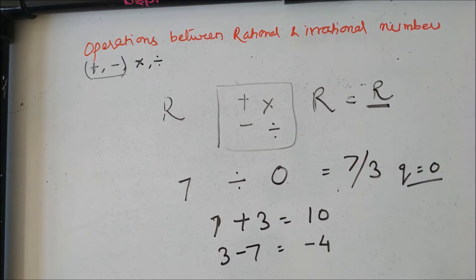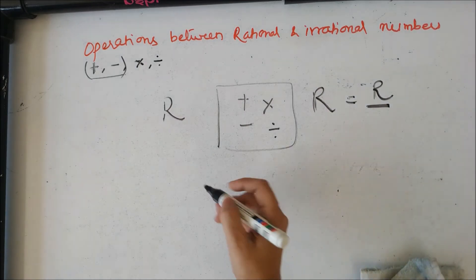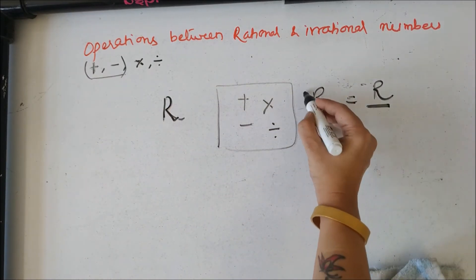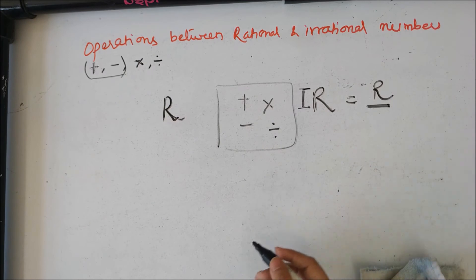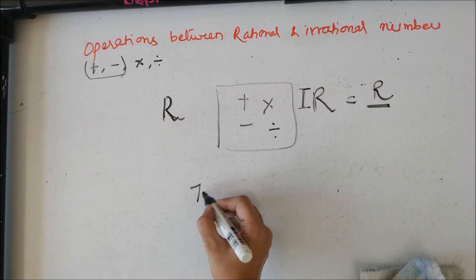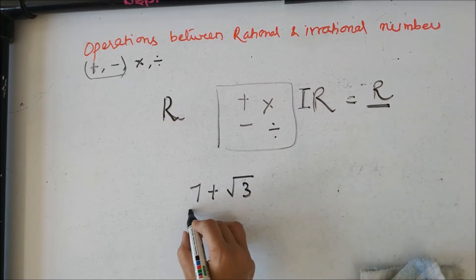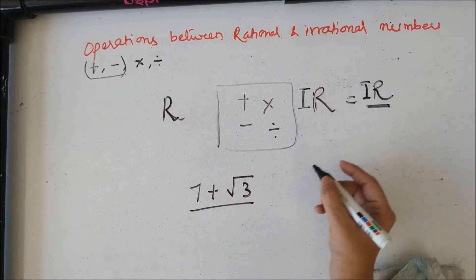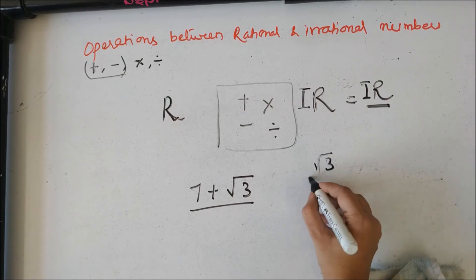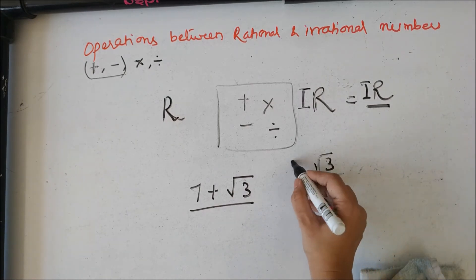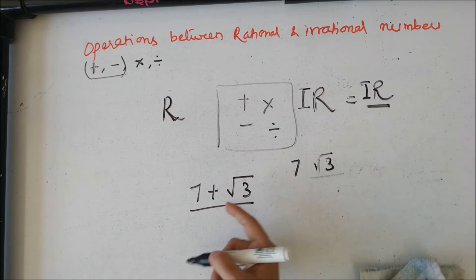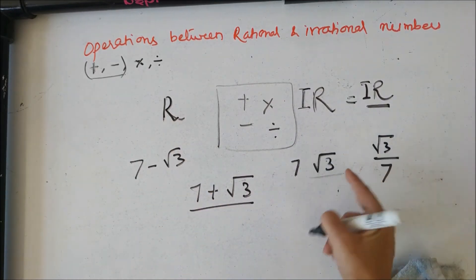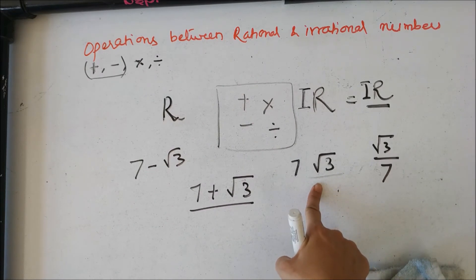Now let's see what about rational with irrational. If any mathematical operation is done between a rational number and an irrational number — for example, 7 plus root 3 cannot be simplified further — the answer is always an irrational number. Whether I multiply, add, subtract, or divide a rational with an irrational, the answer is always irrational.